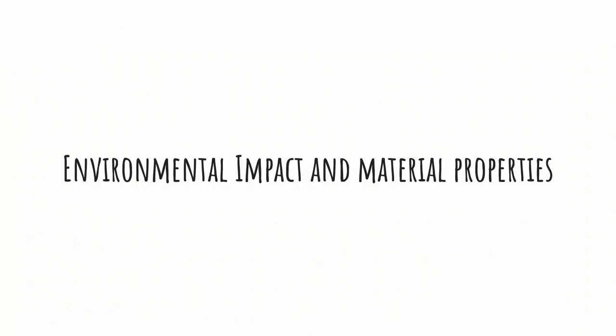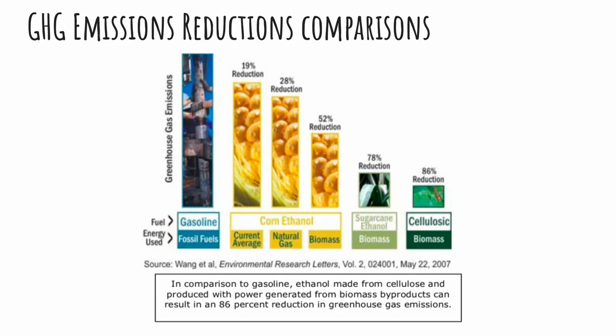On a life-cycle basis, ethanol produced from agricultural residues or dedicated cellulosic crops has significantly lower greenhouse gas emissions and a higher sustainability rating than ethanol produced from grain. According to U.S. Department of Energy studies, cellulosic ethanol reduces greenhouse gas emissions by 85% over reformulated gasoline. By contrast, starch ethanol, which usually uses natural gas to provide energy for the process, reduces greenhouse gas emissions by only 18% to 29% over gasoline.